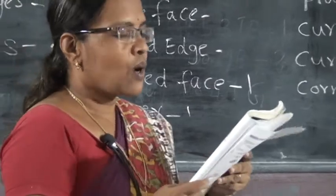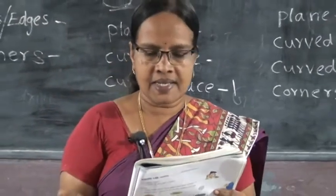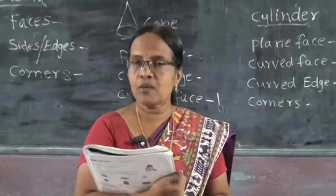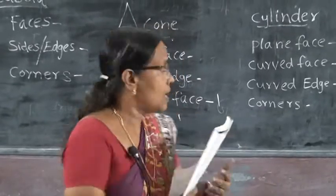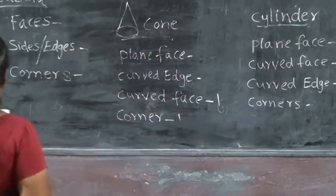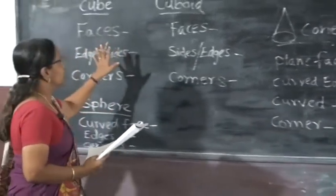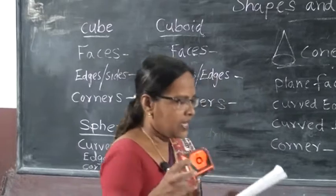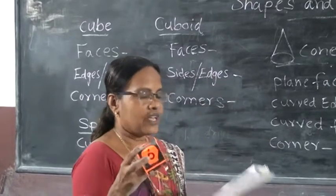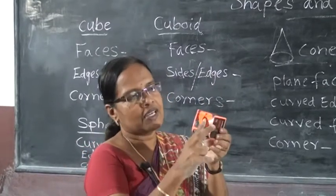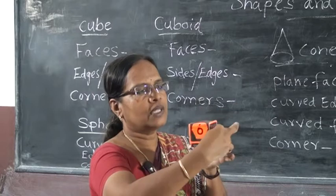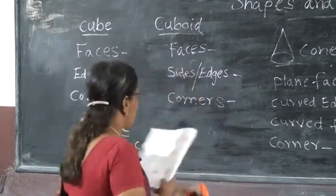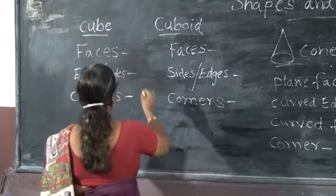Next, solid shapes have faces, sides and corners. Solid shapes have faces, sides and corners. Cube — how many faces? This is a cube. Count the faces: one, two, three, four, five, six. Six faces.